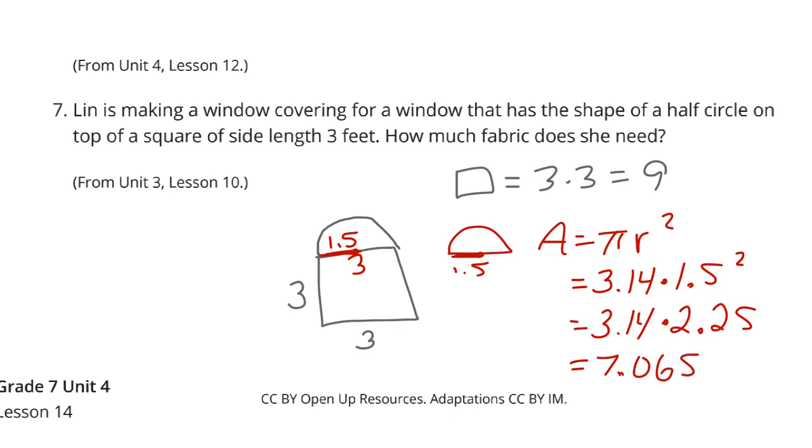But that's the full circle. So if I divide by 2 or multiply by 1/2, we're going to end up with 3.5325 or so for that half circle. Add those two numbers together, the 9 plus the 3.5325, you get 12.5325 square feet or so.